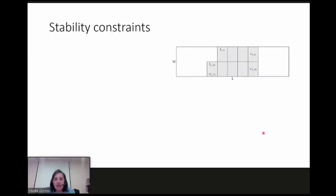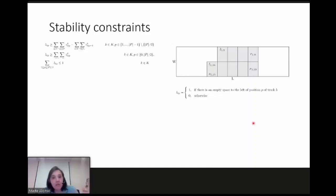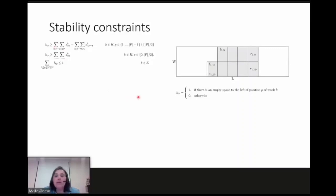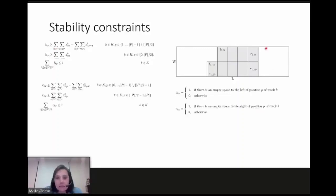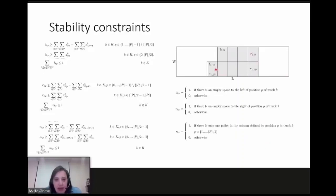The geometric center of gravity must be placed in the ideal position not trespassing the second axle. For stability constraints, we want to load pallets without empty spaces between them. We add three new binary variables: l_kp is one if there is an empty space on the left of a position; a corresponding variable for empty space on the right; and s_kp is one if there is a pallet with an empty space in the opposite row. Only one s_kp equal to one is allowed per truck. These variables are constrained so that at most one empty-left and two empty-right positions are allowed per row.